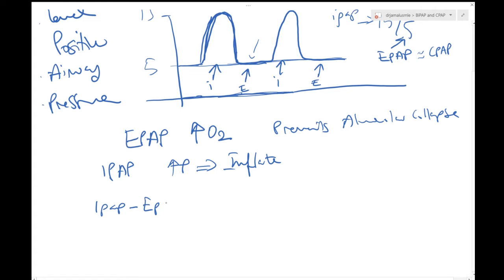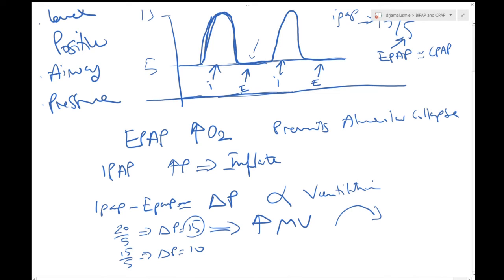Now the more difference between the IPAP and the EPAP, or what you can call delta pressure, so IPAP minus EPAP, that corresponds to how much ventilation you have. If you have someone on a setting of 20 over 5, delta pressure will be 15. If you have someone on 15 over 5, his delta pressure will be 10. This patient will have more minute ventilation because of this difference.